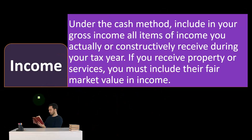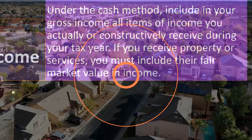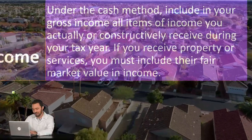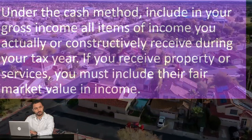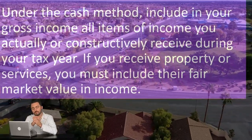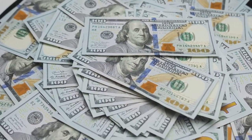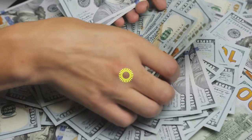Under the cash method, include in your gross income all items of income you actually and constructively receive during your tax year. If you receive property or services, you must include their fair market value in income. Note that the differences between these two systems are usually timing differences. On a cash-based system, you're not going to record the income until you receive payment. If you did the work and got paid at the same point in time — like a restaurant where someone receives food and pays simultaneously — then either a cash or accrual method will record the same transaction, though for different reasons.